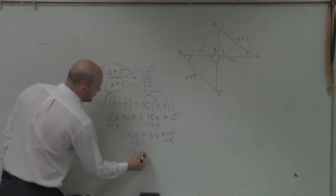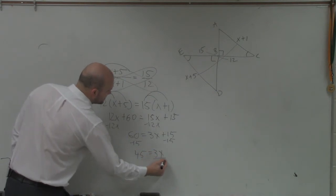Subtract 15. 45 equals 3x. Divide by 3. Divide by 3. x equals 15.